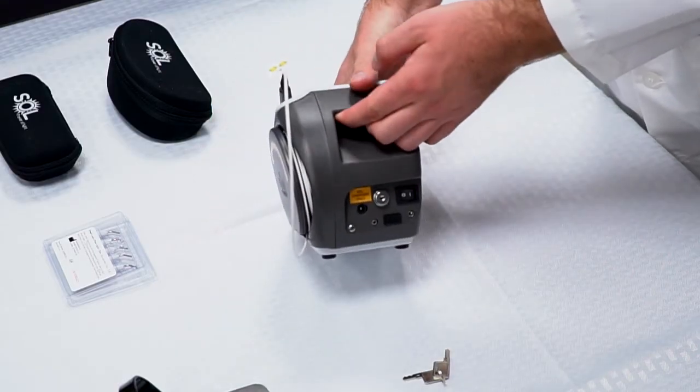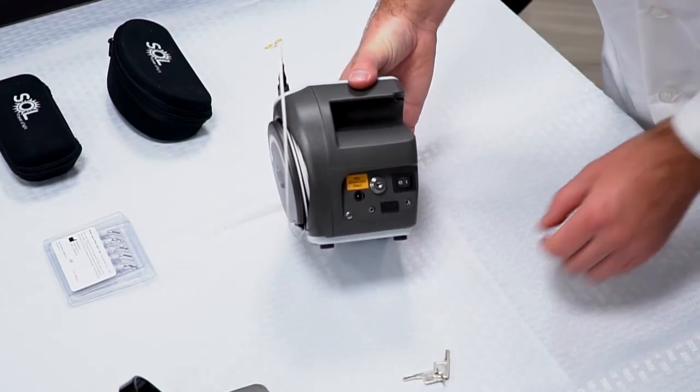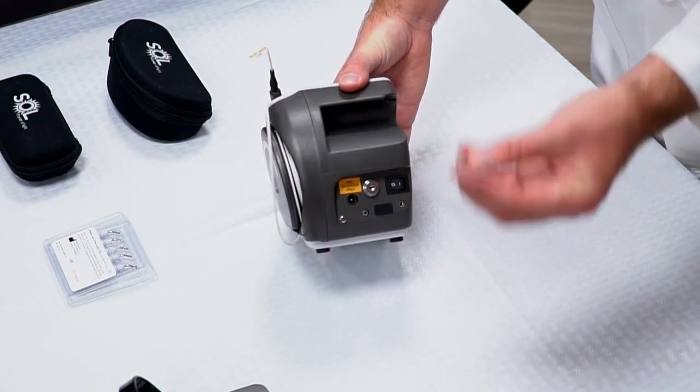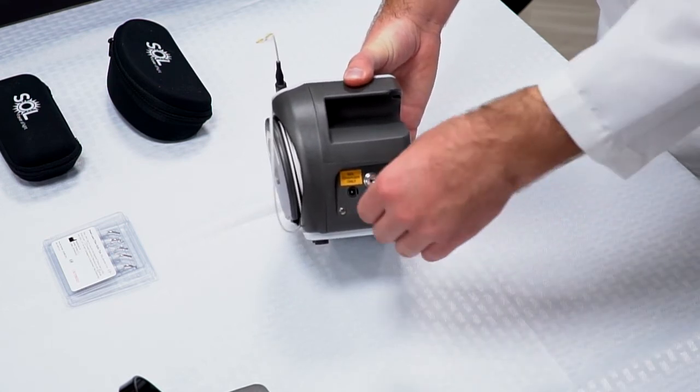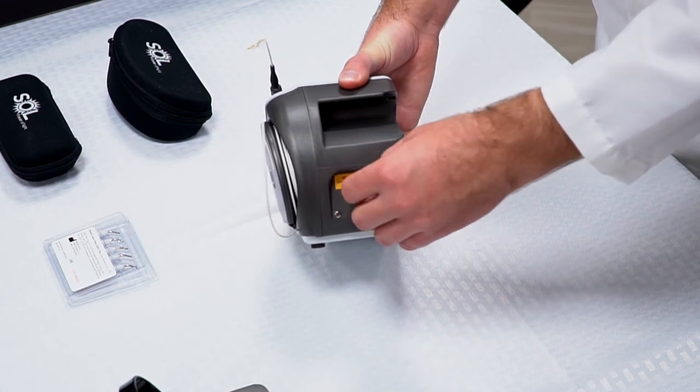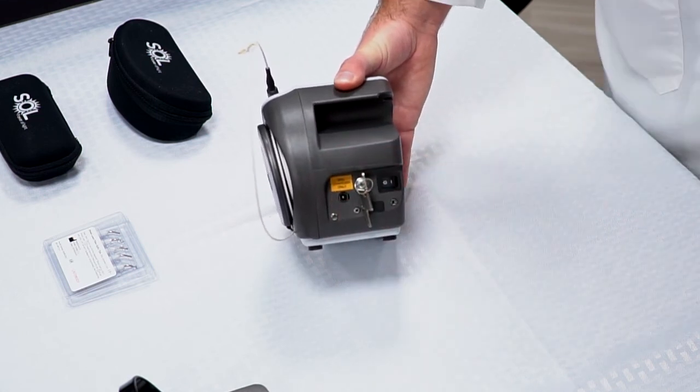To turn it on, look in the back of the unit, take the supplied keys, place them into the key slot here, and twist them on.